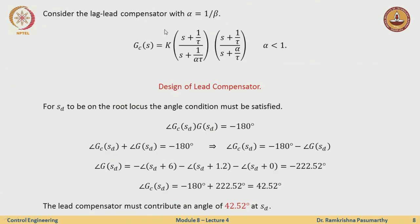We conclude that with just a proportional controller, neither the transient specifications nor the steady state specifications are met. Therefore, we need to design both the lead and the lag compensator. Let us start with the simple case where alpha times beta equals 1.